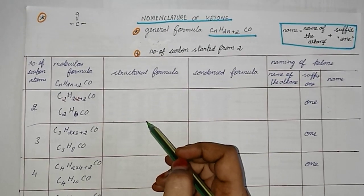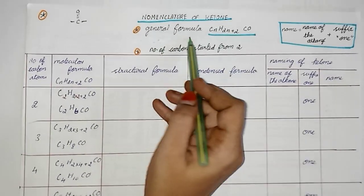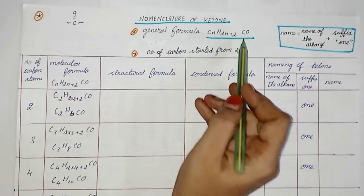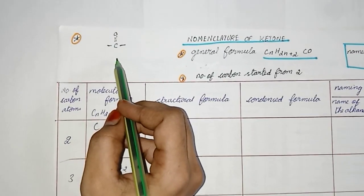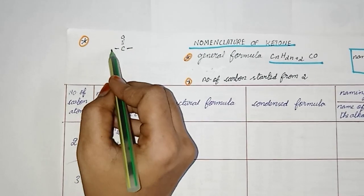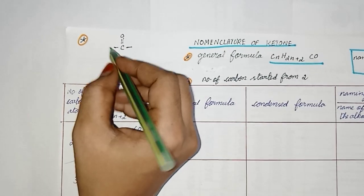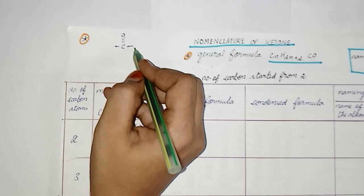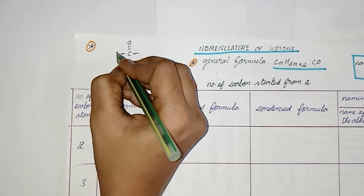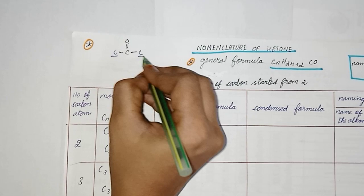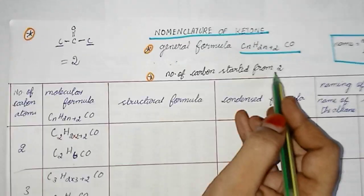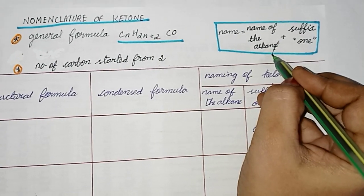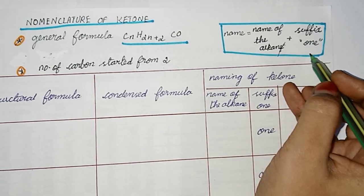In this part we see about nomenclature of ketone. The general formula for ketone is CnH2n+2CO. Here N starts from 2, because ketone is different from other functional groups — it contains two linking sides. These two linking sides must contain at least one carbon each to form a ketone compound, so the minimum requirement is 2. The name is formed from the alkane by deleting the 'e' and adding the suffix '-one'.